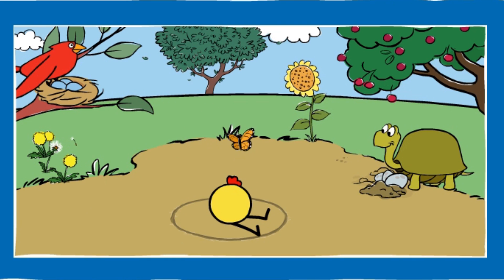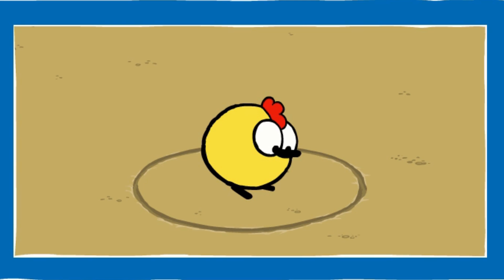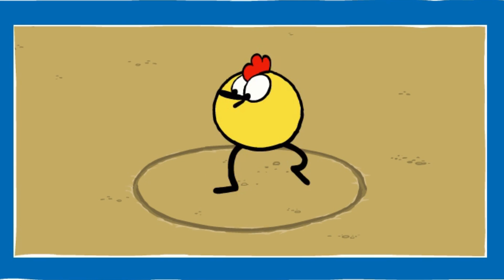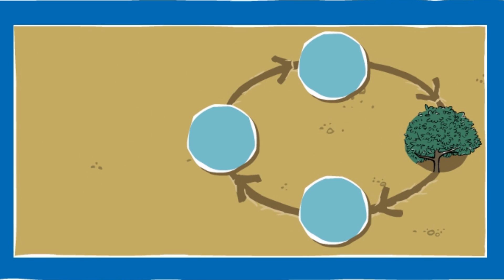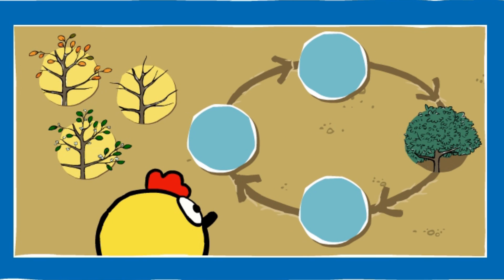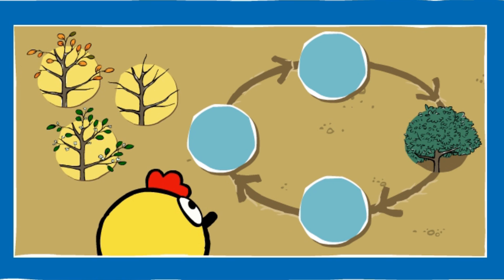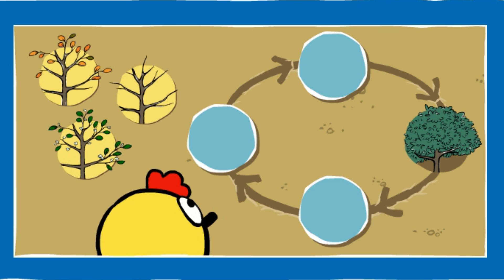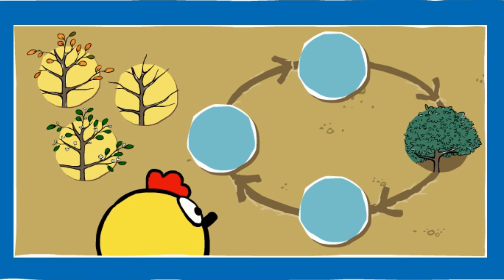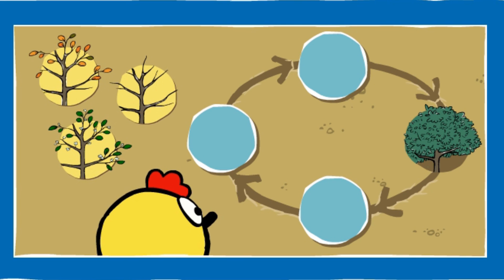Beech tree! Let's explore the seasons with Peep. How does a beech tree change as the year goes by? Help Peep put things in the right order. Drag the pictures onto the spots in the circle where you think they go. Think about what happens first and what happens next.